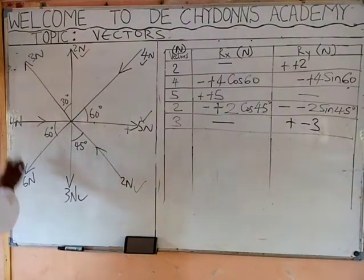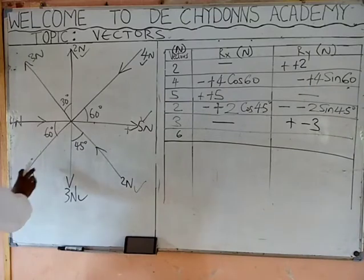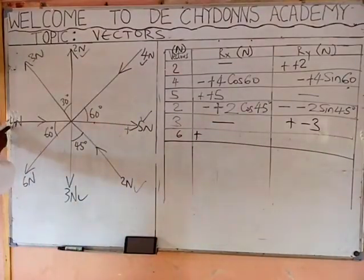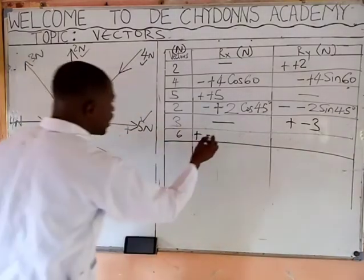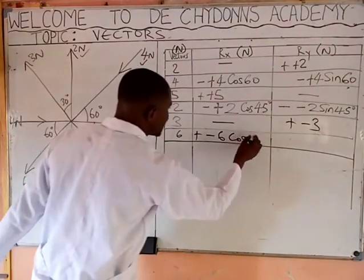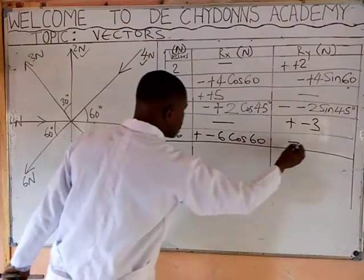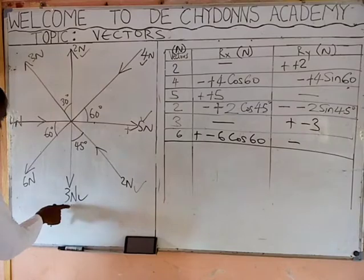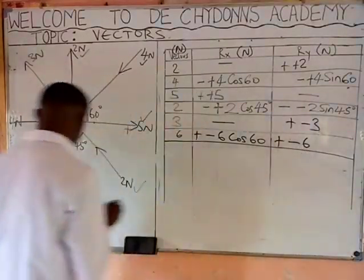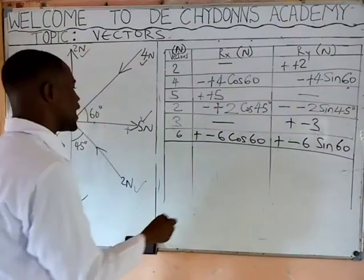The next vector is 6 Newtons, located between x and y. To resolve to the x-axis: the direction of the arrow is plus, the Cartesian x-axis sign is minus, the force is 6, and use cosine with the angle it makes with the horizontal — that is 60 degrees. For the y-axis: the y-axis Cartesian sign is minus, the arrow direction is plus, the force is 6, use sine — that is 60 degrees. We are done with this vector.